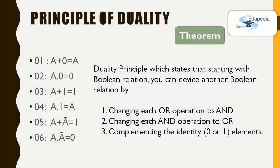Now these six laws we have came across up to now are known as duality laws because by using the duality principle we can derive another law among these six. Now what is this duality principle? Duality principle states that starting with a boolean relation you can devise another boolean relation by: 1. Changing each OR operation to AND operation. 2. Changing each AND operation to OR operation. 3. Complementing the identity (0 or 1) elements.